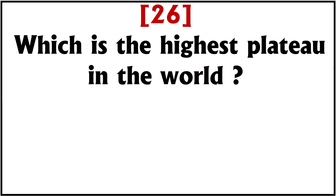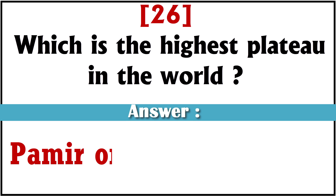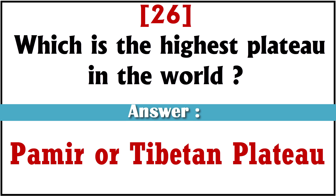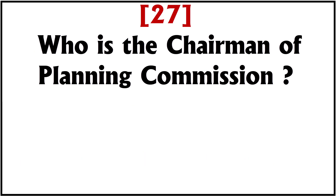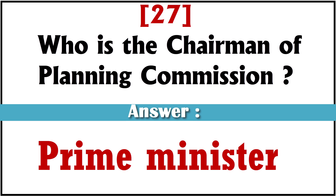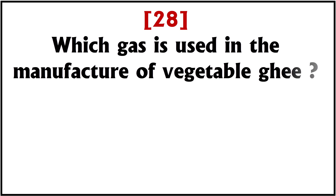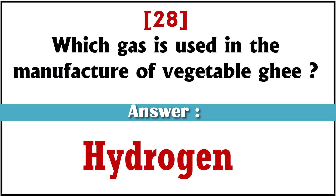Which is the highest plateau in the world? Pamir or Tibetan plateau. Who is the chairman of the Planning Commission? Prime Minister. Which gas is used in the manufacturing of vegetable ghee? Hydrogen.